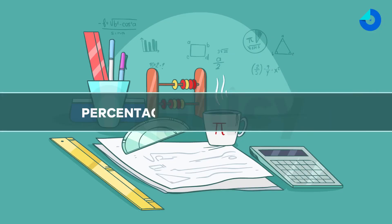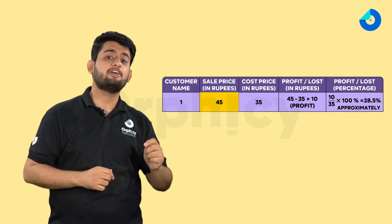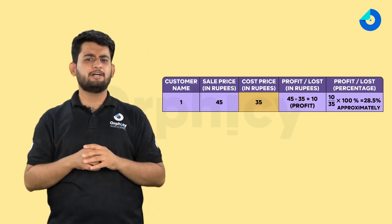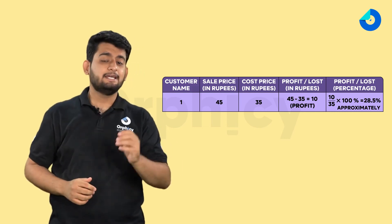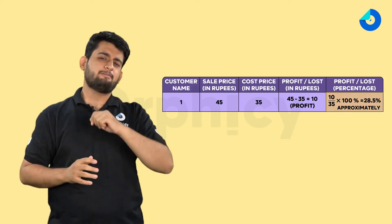But there are some questions where you can express them in percentages, which is very effective. The percentage of profit or loss always comes from the cost price. In the first case, where customer 1 gave 45 rupees, Ram Babu made a 10 rupees profit. The cost price was 35. So the profit percentage will be 10 divided by 35 into 100%, which is equal to approximately 28.5%.